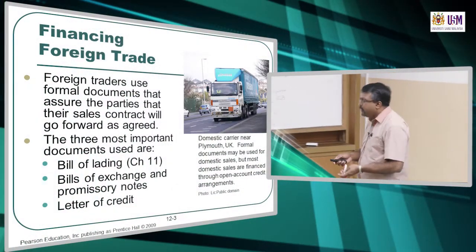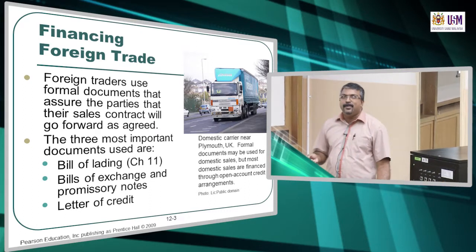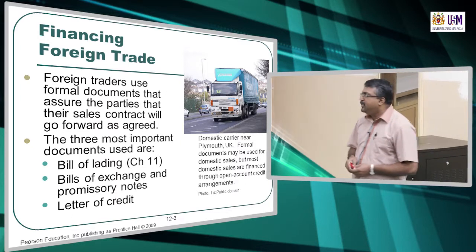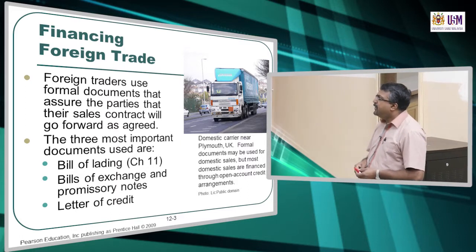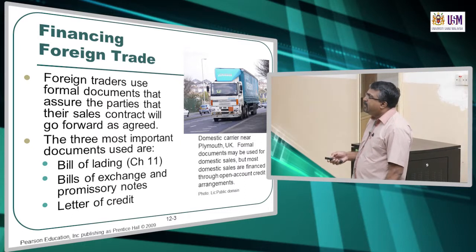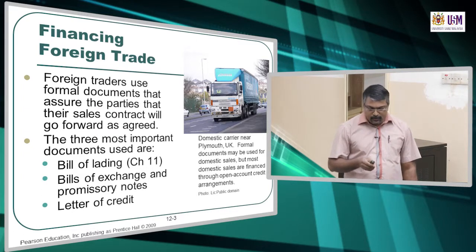Financing foreign trade — we cannot run away from involving money when we come to trade. Foreign traders use formal documents that assure the parties that their sales contract will go forward as they agreed. Once payment is made, the goods can be transferred or the services completed. We look at three: bill of lading, bills of exchange, and promissory notes. There is another one — letter of credit — but we will not include it in the scope of our curriculum.